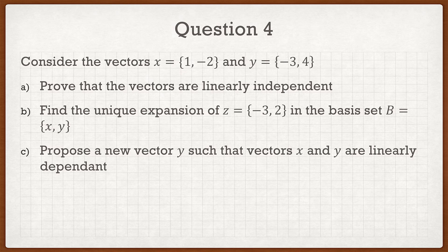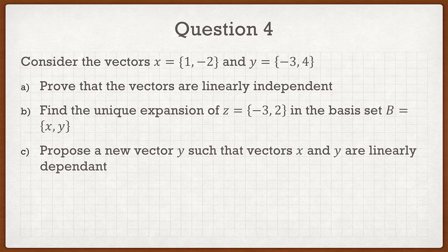So the question says consider the vectors x equals 1, negative 2, and y equals negative 3, 4. The question is split into three parts. Part A says prove that the vectors are linearly independent. So that's nice, you don't have to figure out if they're dependent or independent. The question already tells you it's independent.